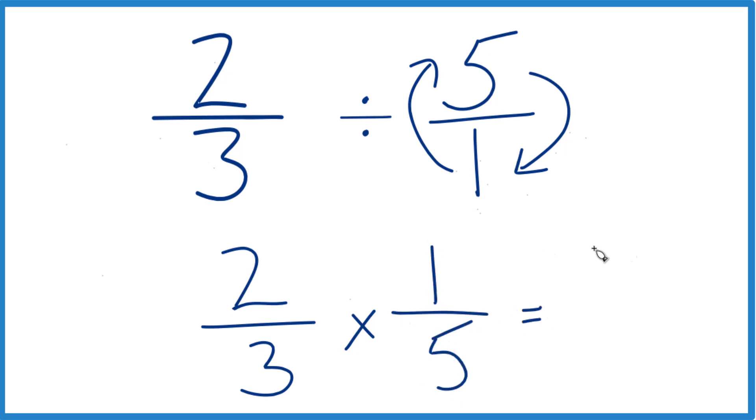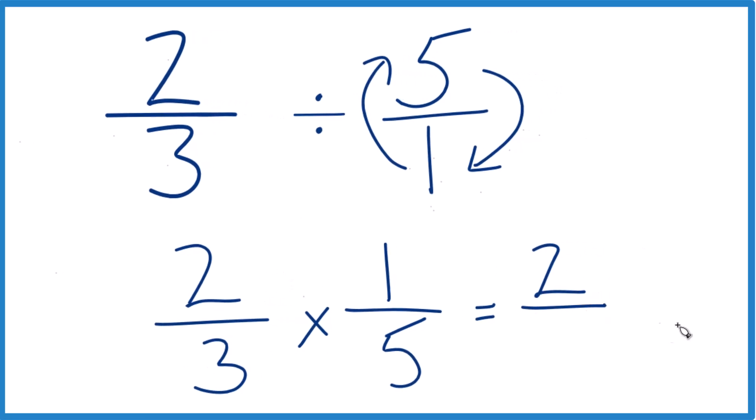Now when we multiply fractions, multiply the numerators: 2 times 1 is 2. And then the denominators: 3 times 5 is 15.